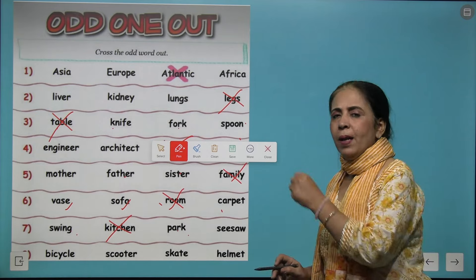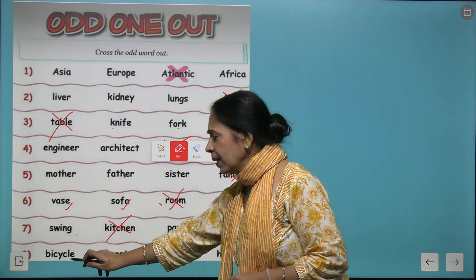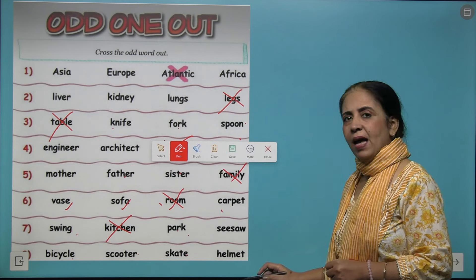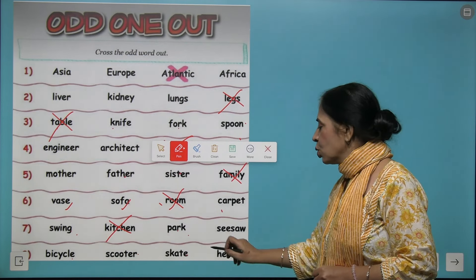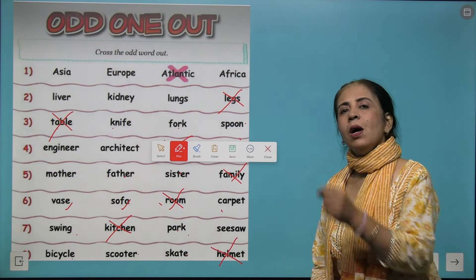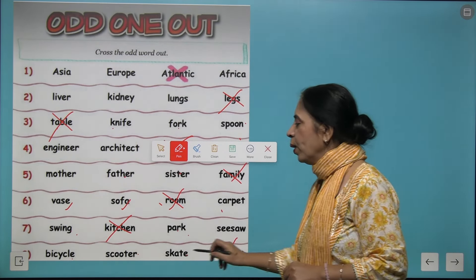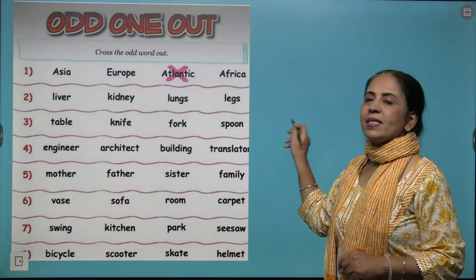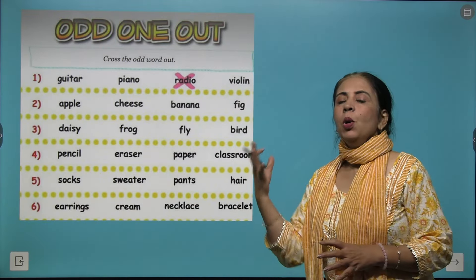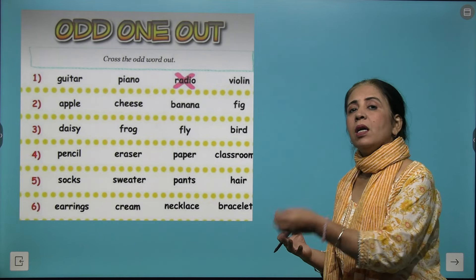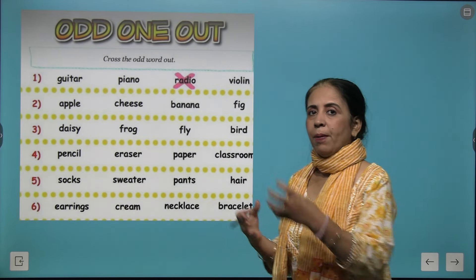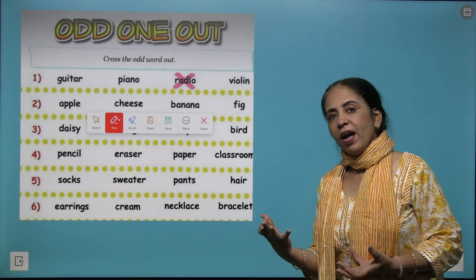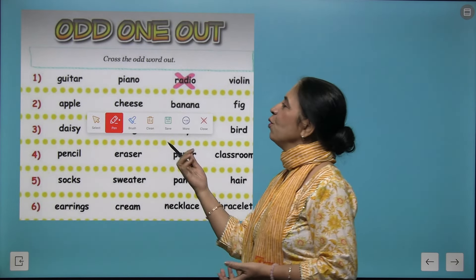Are you understanding it? Let's try another one: bicycle, scooter, skate, and helmet. Helmet is the odd one out because you wear it when you ride the other three things. Depending on the characteristic, we choose which one does not belong to that particular group and classify accordingly.